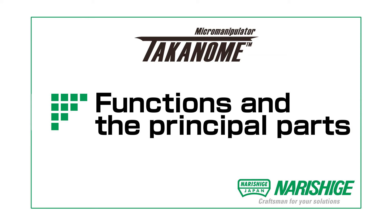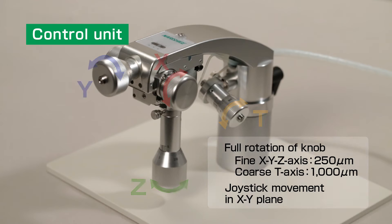These are the names and functions of the principal parts. Each of the X, Y, and Z-axis knobs provides movement of 250 microns per rotation.